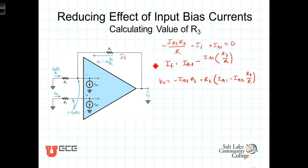Now, at this point, to make the calculations a little bit easier, we're going to say that the input bias currents, IB1 and IB2, can be replaced with I sub B, the average input bias current. You'll notice here that we have terms involving IB2 and IB1.